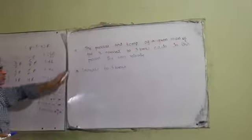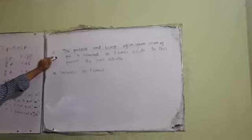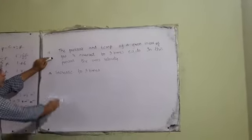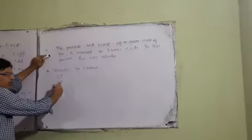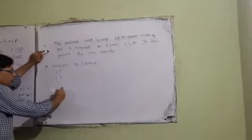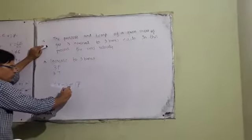What can you say about the pressure and temperature of a gas in a problem? If the pressure increases three times and the temperature increases three times, the root mean square velocity is directly proportional to the square root of temperature.